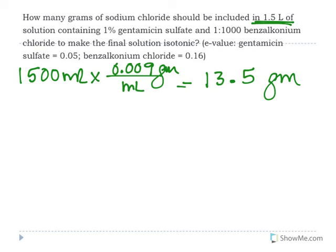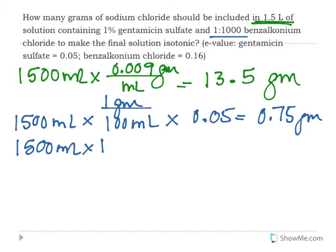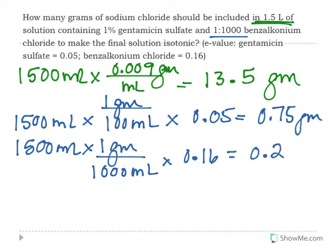We have two drugs contributing: gentamicin and benzalkonium. For step two, calculate sodium chloride equivalents for each. Gentamicin is a 1% concentration, so: 1500 mL × (1 g/100 mL) × E-value of 0.05 = 0.75 grams. For benzalkonium at a ratio strength of 1:1000 (1 g per 1000 mL): 1500 mL × (1 g/1000 mL) × E-value of 0.16 = 0.24 grams of sodium chloride equivalents.